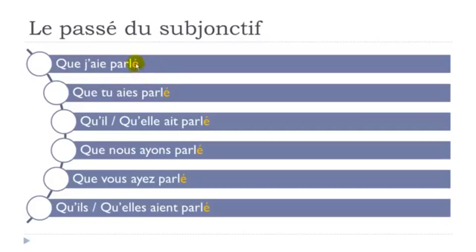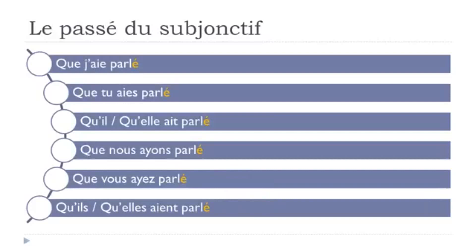Notice that the participe passé is shown in orange. In normal structures with avoir, when you have the subject and then the verb, you should not add anything at the end of your participe passé — even if the subject is feminine, nothing changes. So: que j'aie parlé, que tu aies parlé, qu'il ait parlé, qu'elle ait parlé, que nous ayons parlé, que vous ayez parlé, qu'ils aient parlé, qu'elles aient parlé. That's the passé du subjonctif for parler.